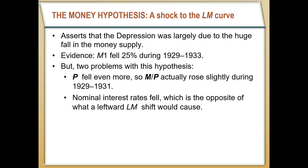On its surface, this somewhat struggles to explain what happened in the Great Depression. Prices fell by more than the money supply, so real money balances — M over P — actually rose slightly at the start of the Great Depression. Put another way, the purchasing power of money actually increased. Similarly, nominal interest rates fell, which is not what we would expect from a leftward shift in the LM curve — we would expect interest rates to increase from that.